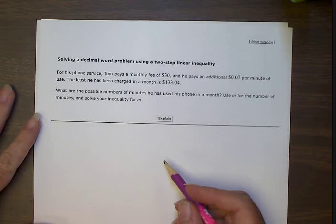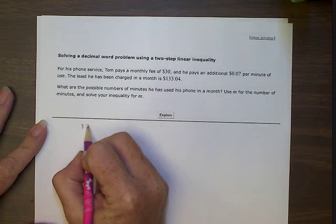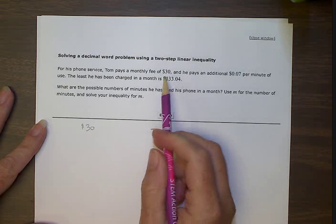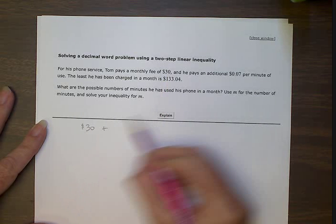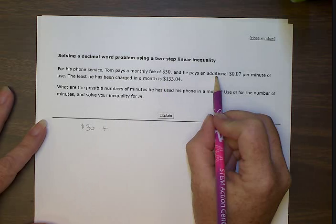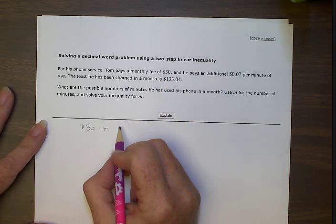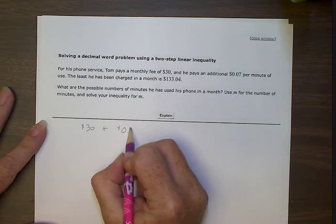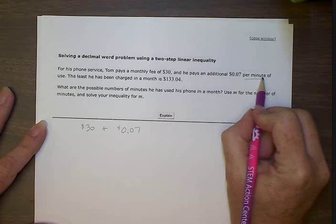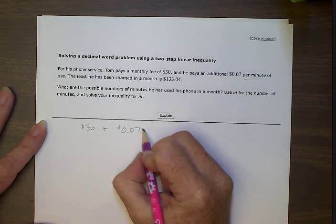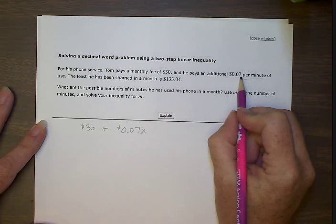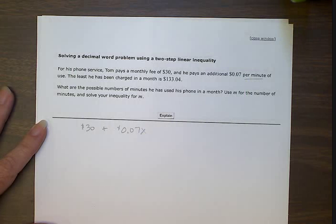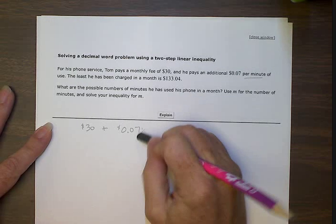So we have that monthly fee, we're going to start with there. Tom pays a monthly fee of $30, and an additional—that means we're going to add $0.07 per minute. That per minute tells us we need to put the X next to this 0.07. Well, in this case our variable is M, so we're going to change that to M.